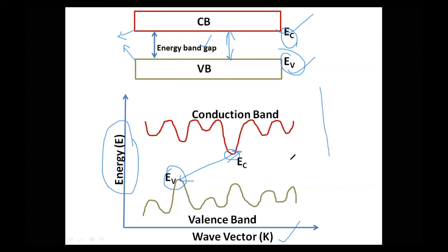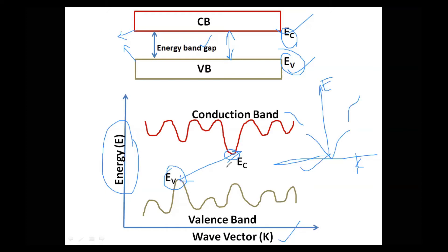If you remember the E-K diagram from band theory of solids, it looks something like this — with energy on the y-axis and wave vector K on the x-axis. The same thing is shown here with an extended x-axis. In this case, if you look at the positions of the bottom of the conduction band and the top of the valence band, they correspond to some wave vector values K1 and K2 respectively.